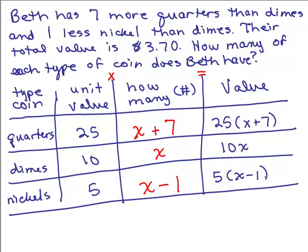And do I know the total value of all the coins? It says their total value is 370. Now it says $3.70 in money, in cents that means 370. So our equation will be to add these three to get 370. That the value of the quarters plus the value of the dimes plus the value of the nickels is going to equal 370.